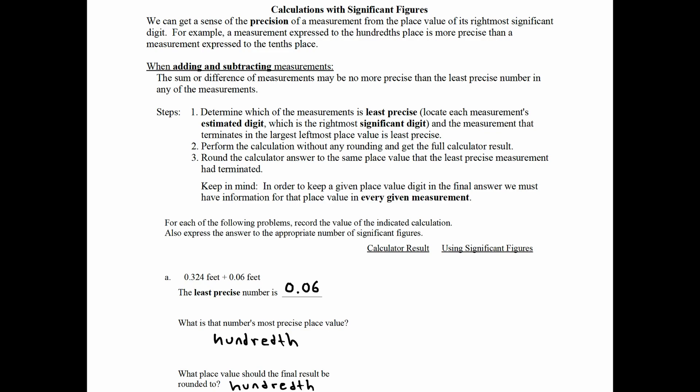We want our final answer to be no more precise than the least precise number that was used in the calculation. In order to demonstrate the logic behind this, I'm going to use some vertical addition. We want to line up the place values and line up the decimal point. And then we just want to add them like in the old grade school way. So 4 plus 0 makes 4, 2 plus 6 makes 8, 3 plus 0 is 3. And that's the calculator result. It's what you'd get if you punched it into a calculator.